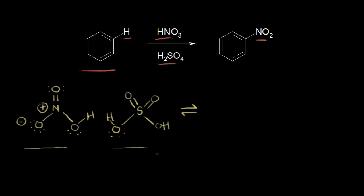Sulfuric acid is actually a stronger acid than nitric acid. So the first step is sulfuric acid is going to function as a Brønsted-Lowry acid and donate a proton. Nitric acid is going to function as a base and accept that proton, with this lone pair of electrons picking up the proton and these two electrons remaining behind on that oxygen.